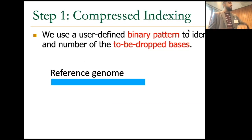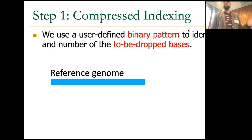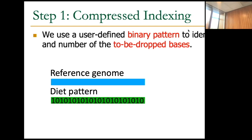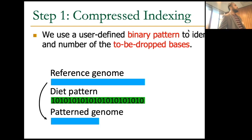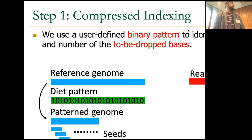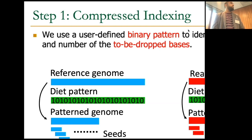The first step is Compressed Indexing. We take a binary pattern from the user — one means keep, zero means remove those characters — and apply that pattern to the reference genome. We get a shortened version of the reference genome: ones kept, zeros deleted, and so on. We then operate over this sparsified genome version. Then we would expect to do the same thing with the read or query, but due to the problem we just mentioned, we cannot.